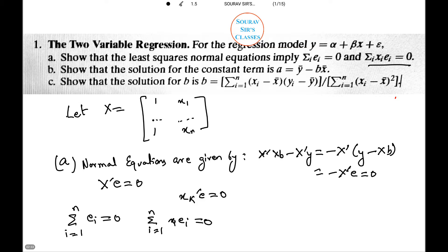Now, we need to show that the solution for the constant term is a equals y bar minus b x bar.